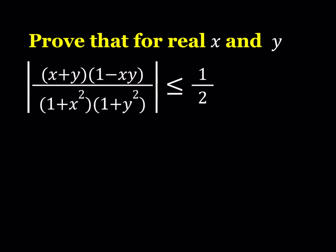Hello everyone. In this video we're going to be proving an inequality for real numbers x and y. We have x plus y times 1 minus xy divided by the product of 1 plus x squared and 1 plus y squared, and we want to show that the absolute value of this expression is less than or equal to 1 half.